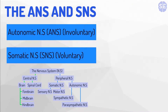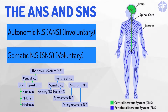Now to the autonomic nervous system and somatic nervous system. The difference between these two is whether they control voluntary or involuntary actions — the autonomic nervous system controls involuntary actions and the somatic nervous system controls voluntary ones. This means the beating of your heart would be part of the autonomic nervous system, while the movement of your hand would be part of the somatic nervous system.